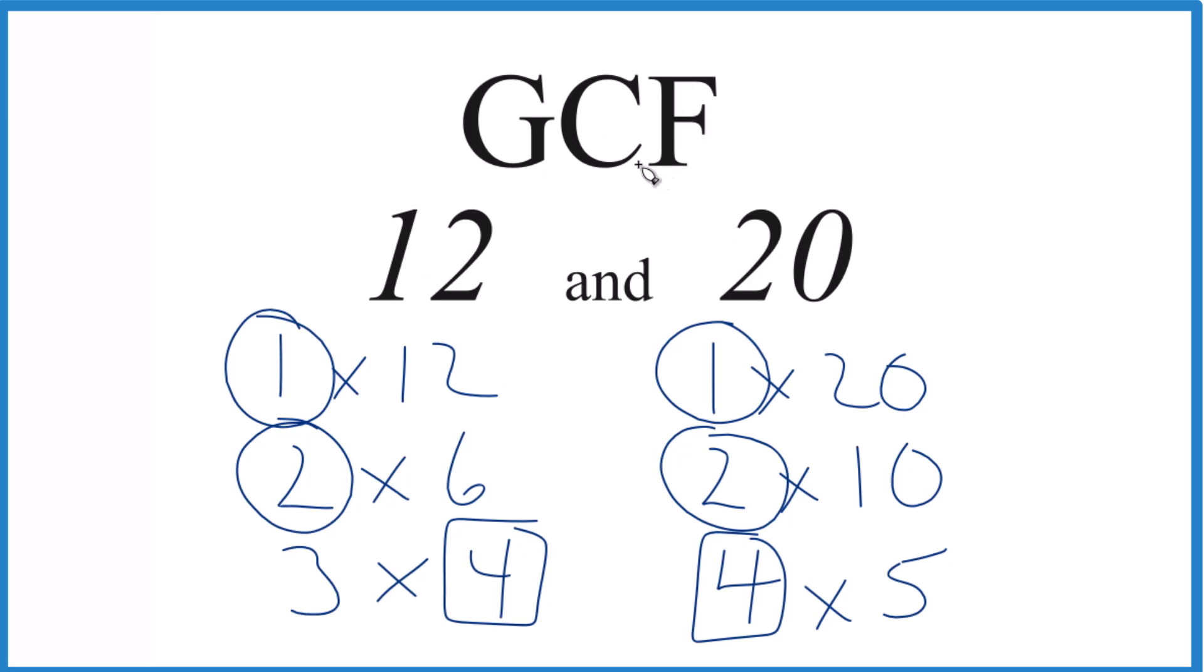So in answer to our question, the GCF for 12 and 20, that's 4.